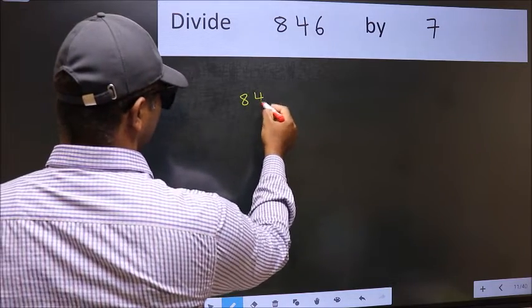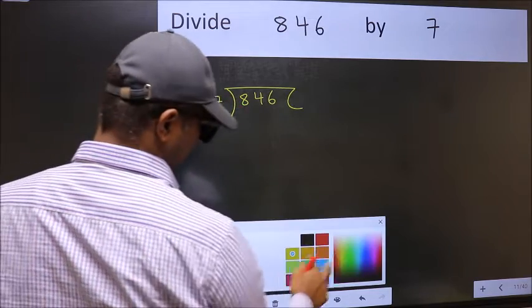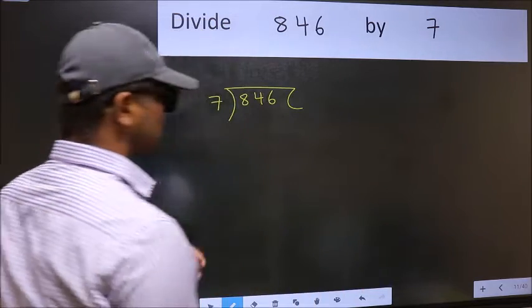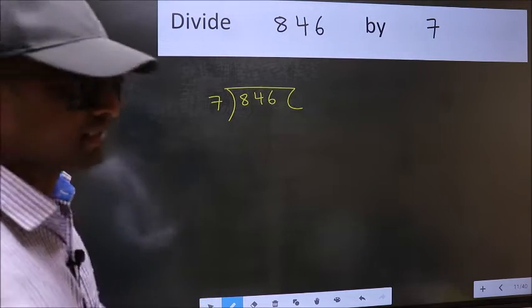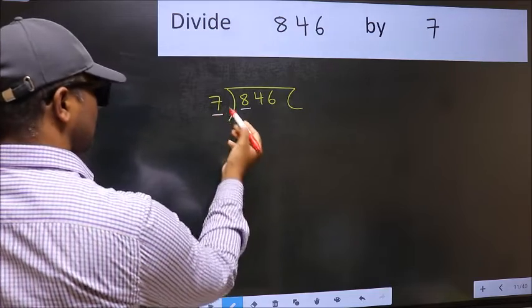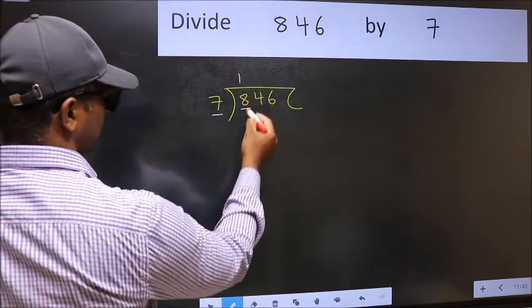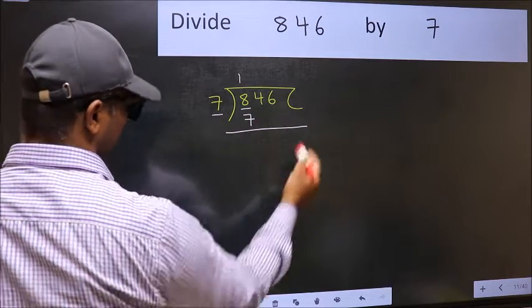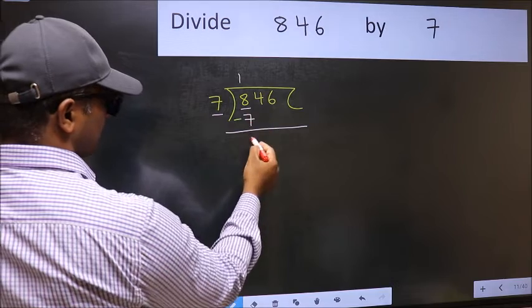846 and 7 here. This is your step 1. Next, here we have 8 and here 7. A number close to 8 in 7 table is 7 once 7. Now you should subtract. 8 minus 7, 1.